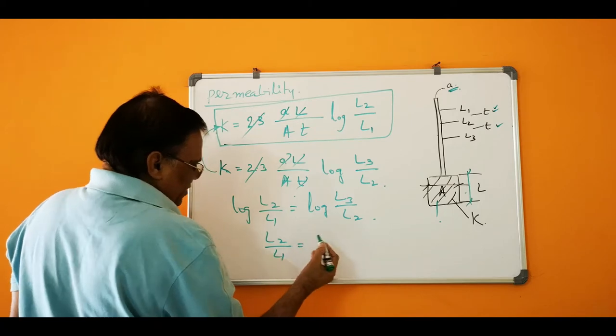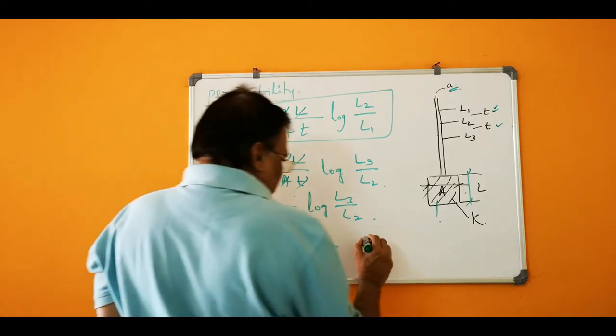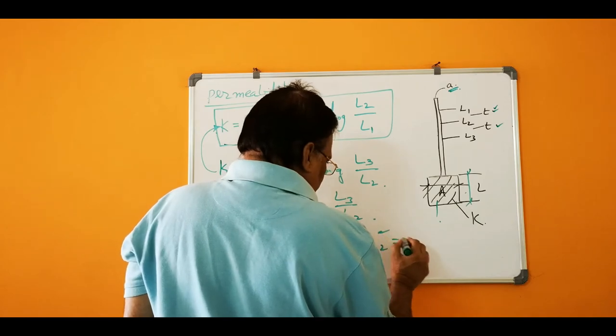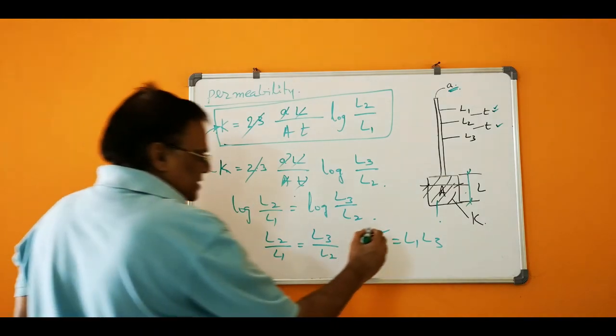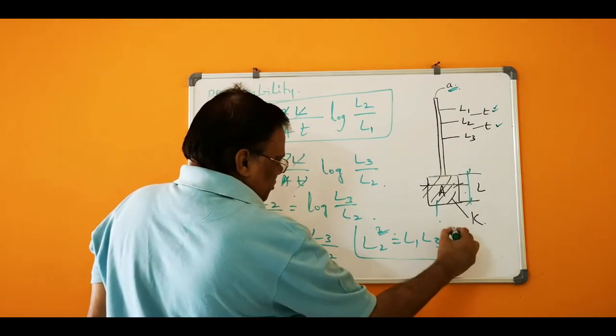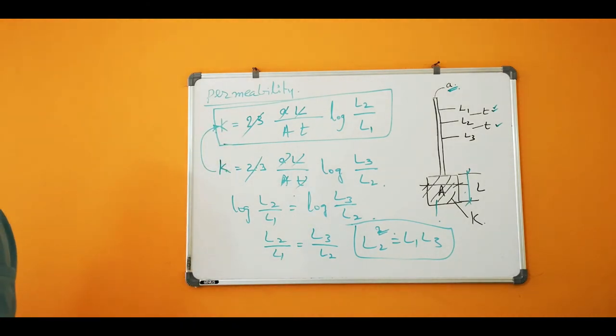L2 square is equal to L1 multiplied by L3. This is the relationship which is drawn and is given in the answer. This is a common GATE problem.